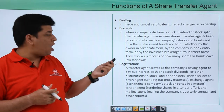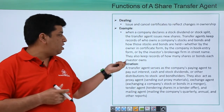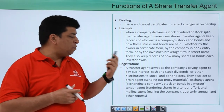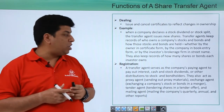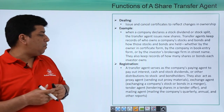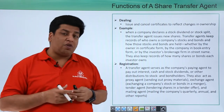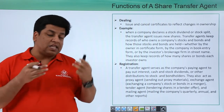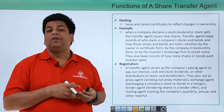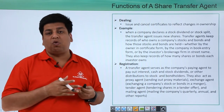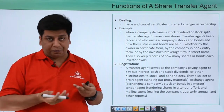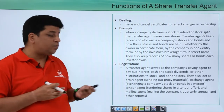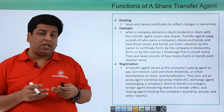Transfer agents keep records of who owns a company's stocks and bonds, and how those stocks and bonds are held — whether by the owner in certificate form, by the company in book entry form, or by the investor's brokerage firm in street name. They also keep records of how many shares or bonds each investor owns, and this is published in the annual statement where major shareholders are declared to the general public.